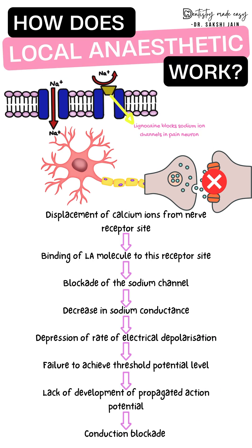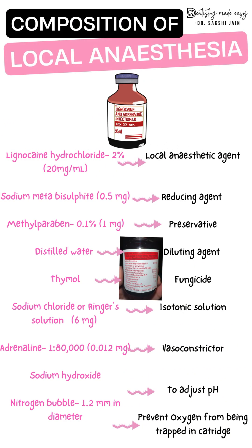Regarding the mechanism, lignocaine blocks the sodium ion channel in the nerve. There is displacement of calcium ions from the nerve receptor site, allowing local anesthesia to bind at that receptor site. This binding causes blockage of the sodium channel, decreasing sodium conductance, which depresses the rate of depolarization, causing failure to achieve threshold potential levels, and leading to lack of action potential development and conduction blockage.